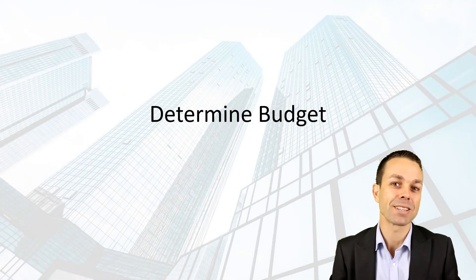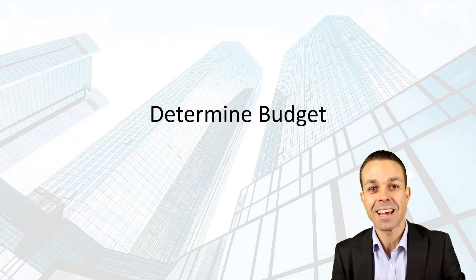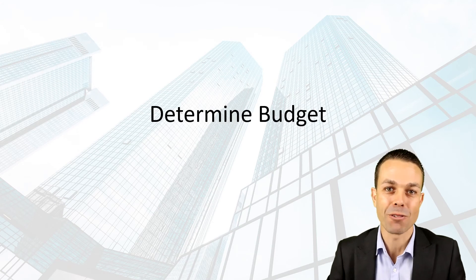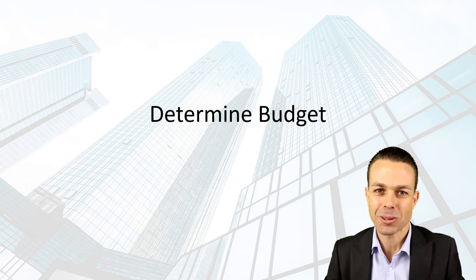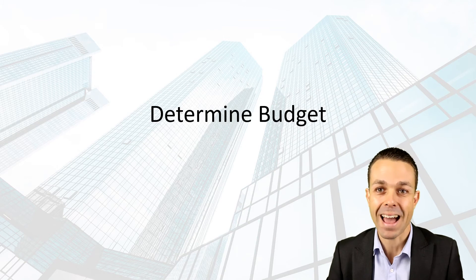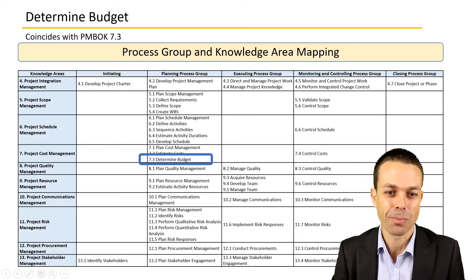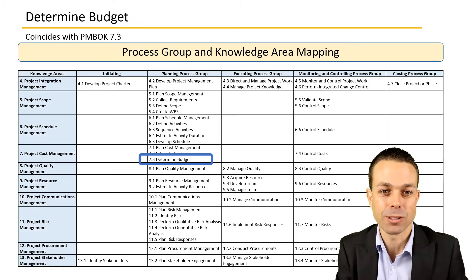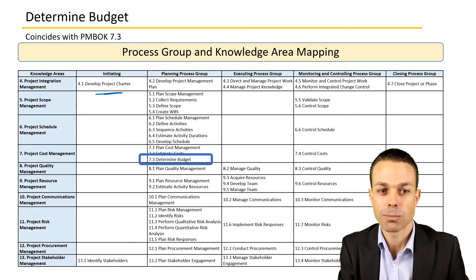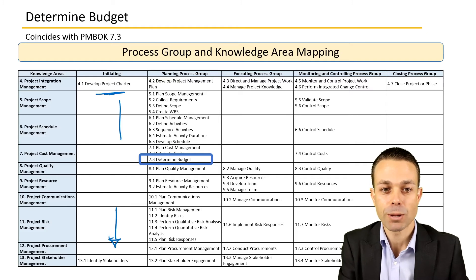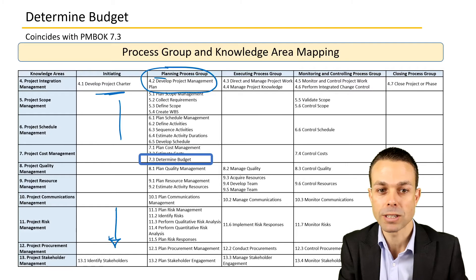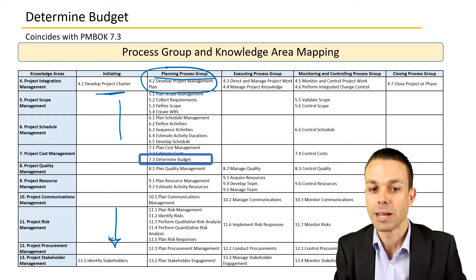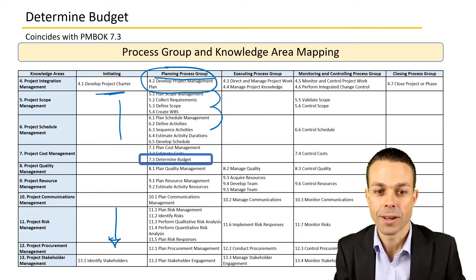Welcome back to the processes in the Project Management Body of Knowledge. This one in particular we're looking at is determining the actual budget itself. We've been on our journey of planning our project: we started with our project charter, found our project stakeholders, then developed our project management plan in our planning process group, where we've planned the scope and the schedule.